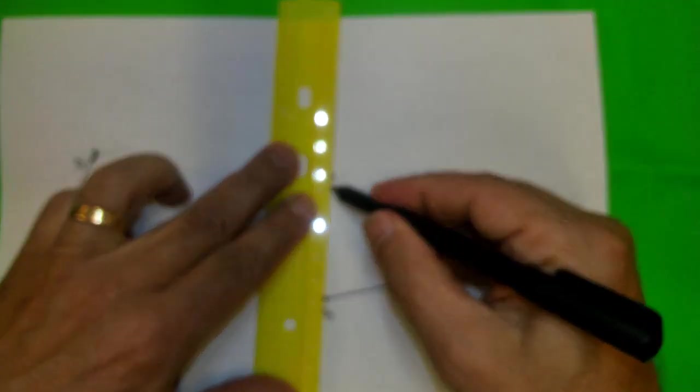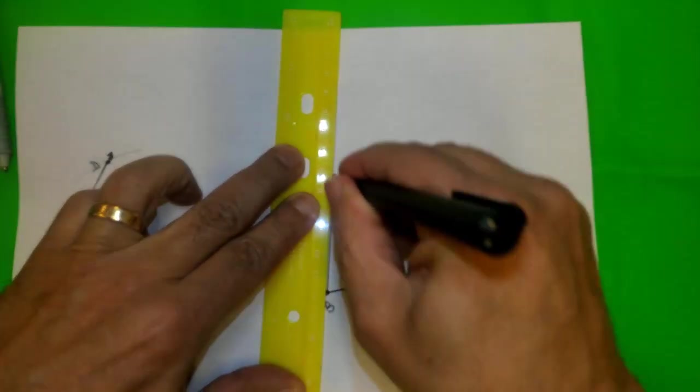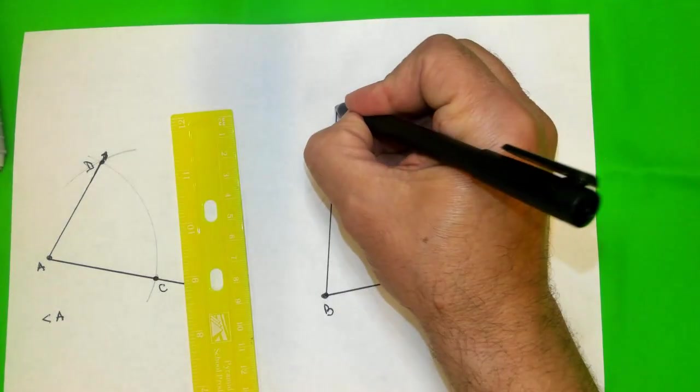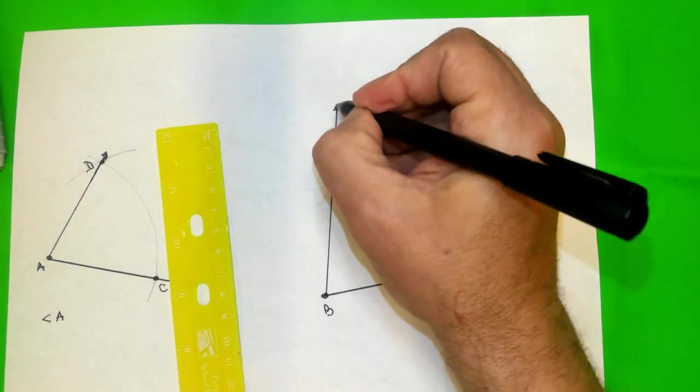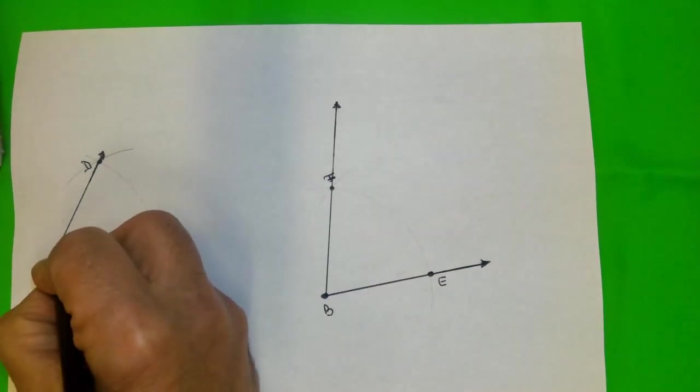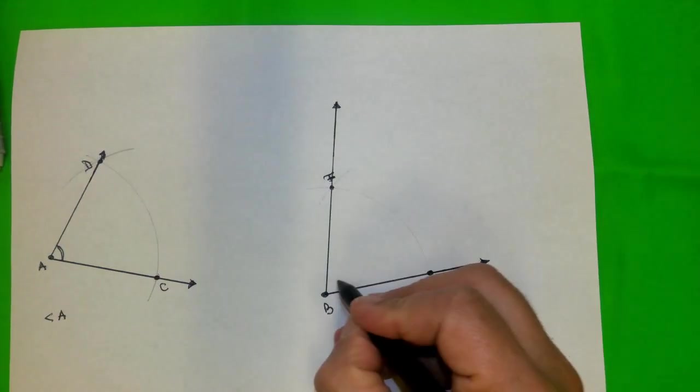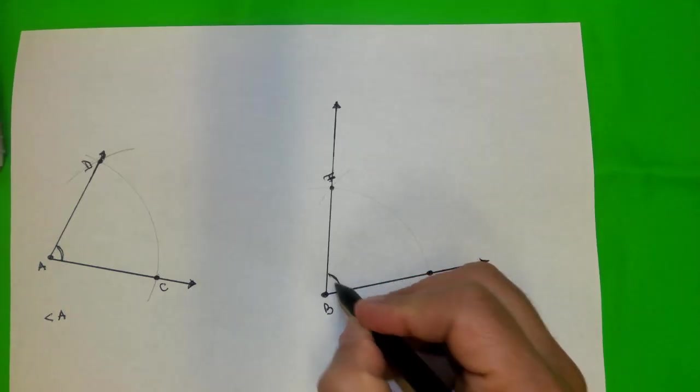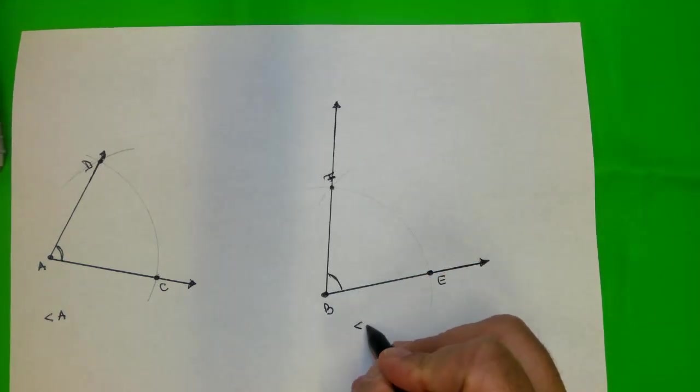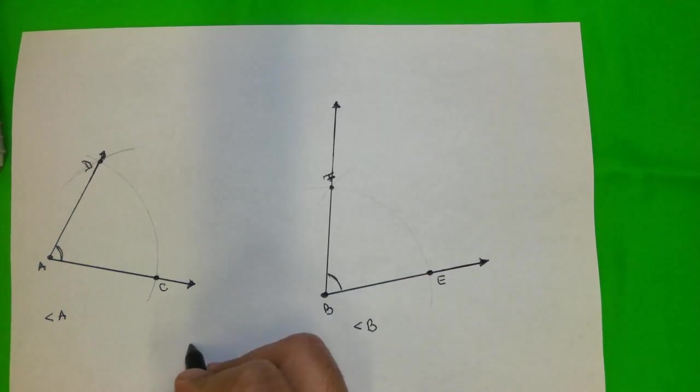And now, we finish the construction. This angle A, how I call it here, and this angle B here, are congruent. And they have the same measure.